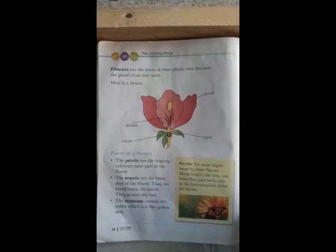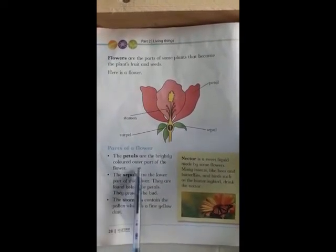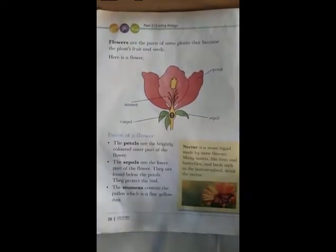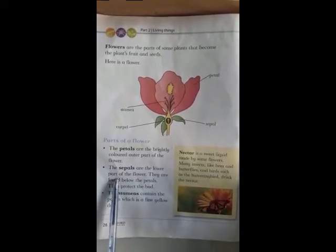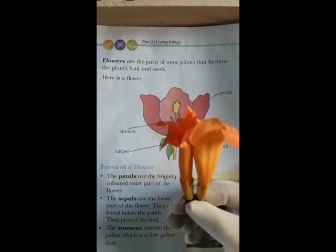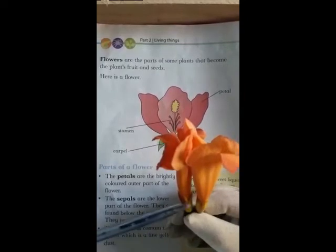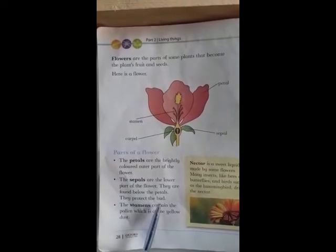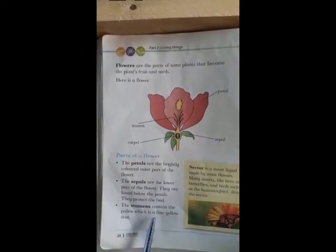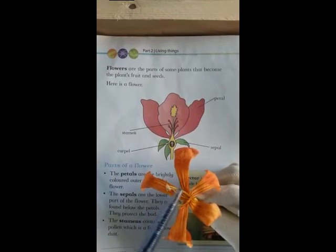Parts of a flower. Can you see different kinds of flowers? The petals are the brightly coloured outer part of the flower. The sepals are the lower part of the flower, found below the petals — they protect the bud. The stamens contain the pollen, which is a fine yellow dust. Look at this — the fine yellow part is called the stamen.